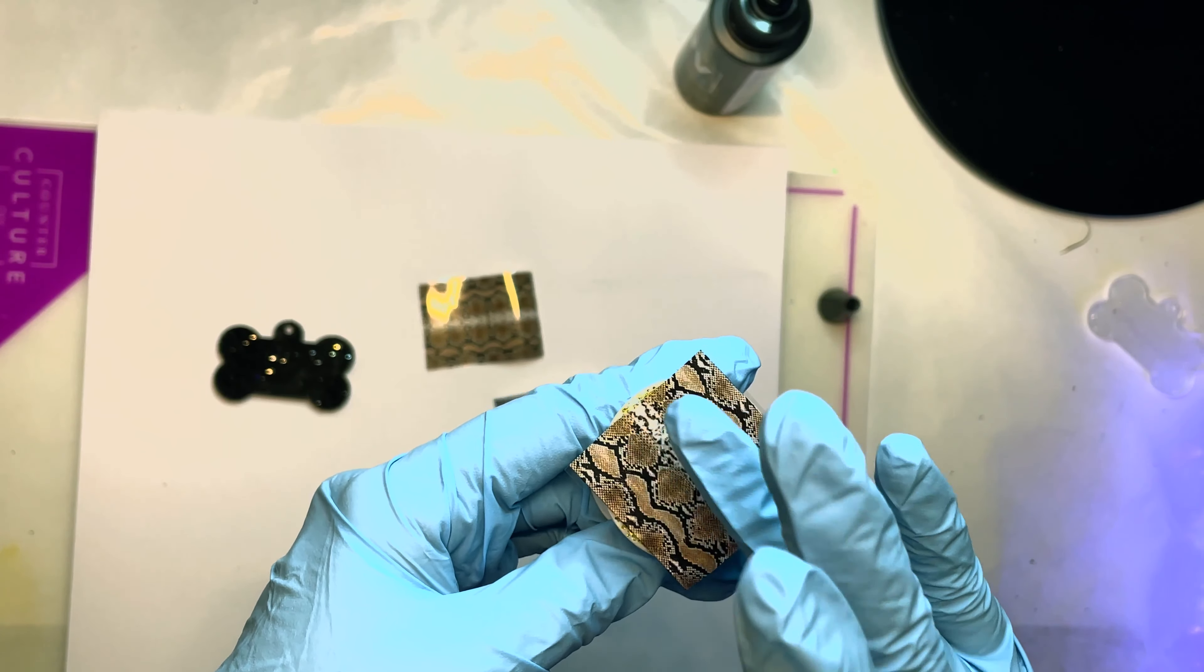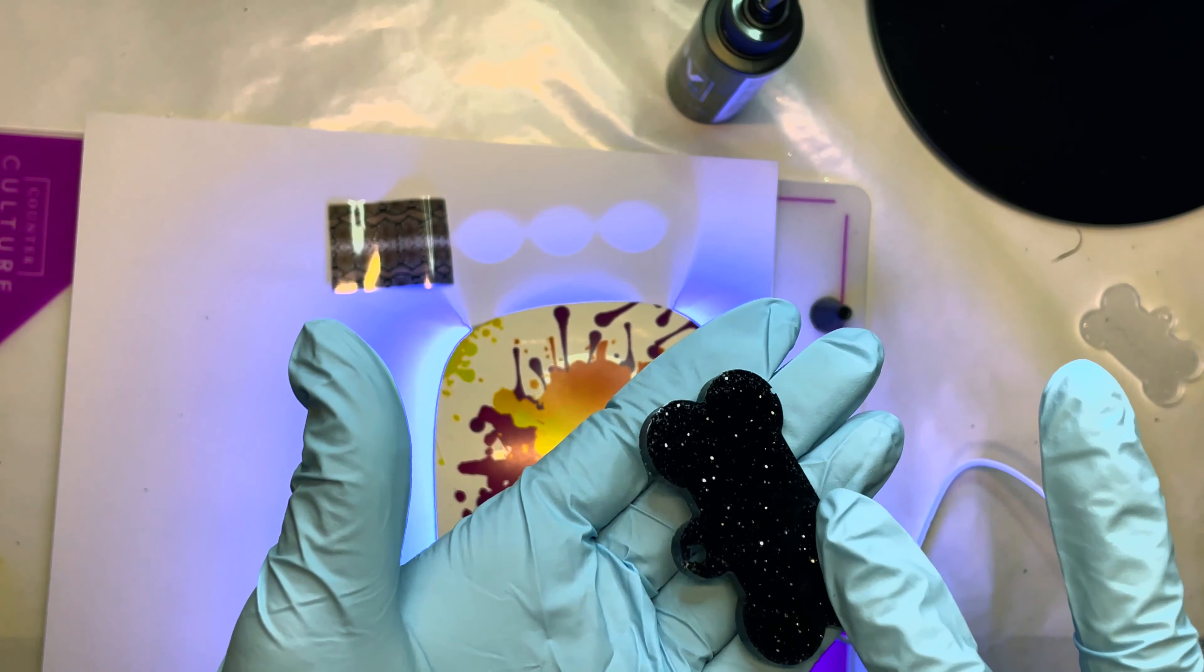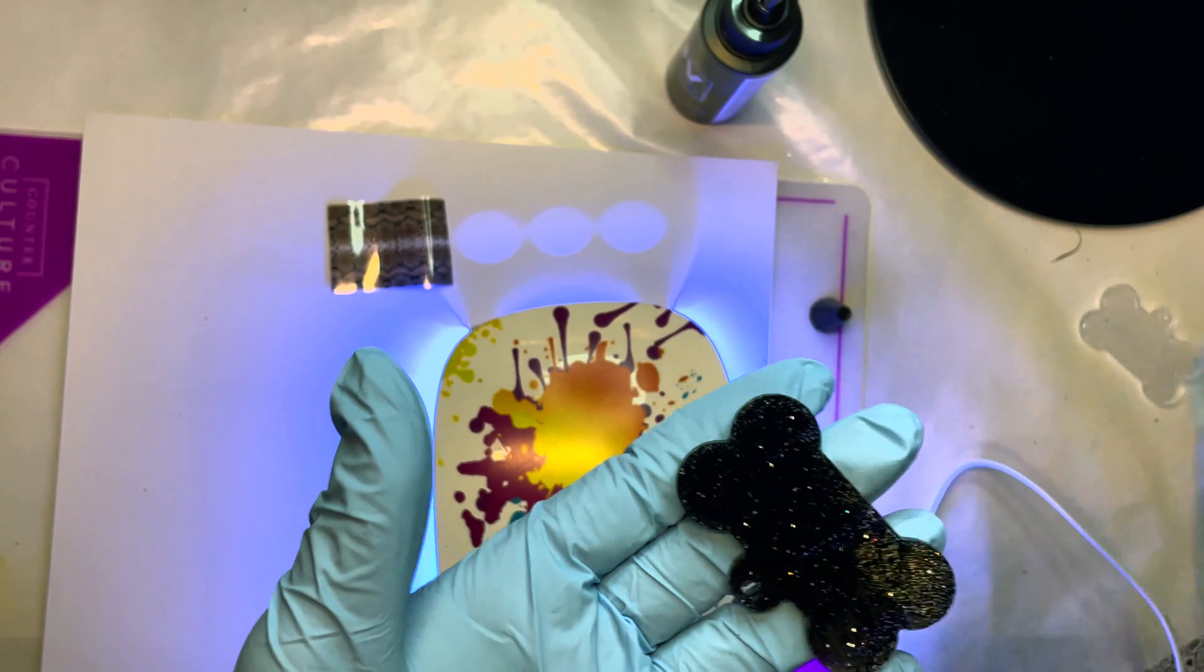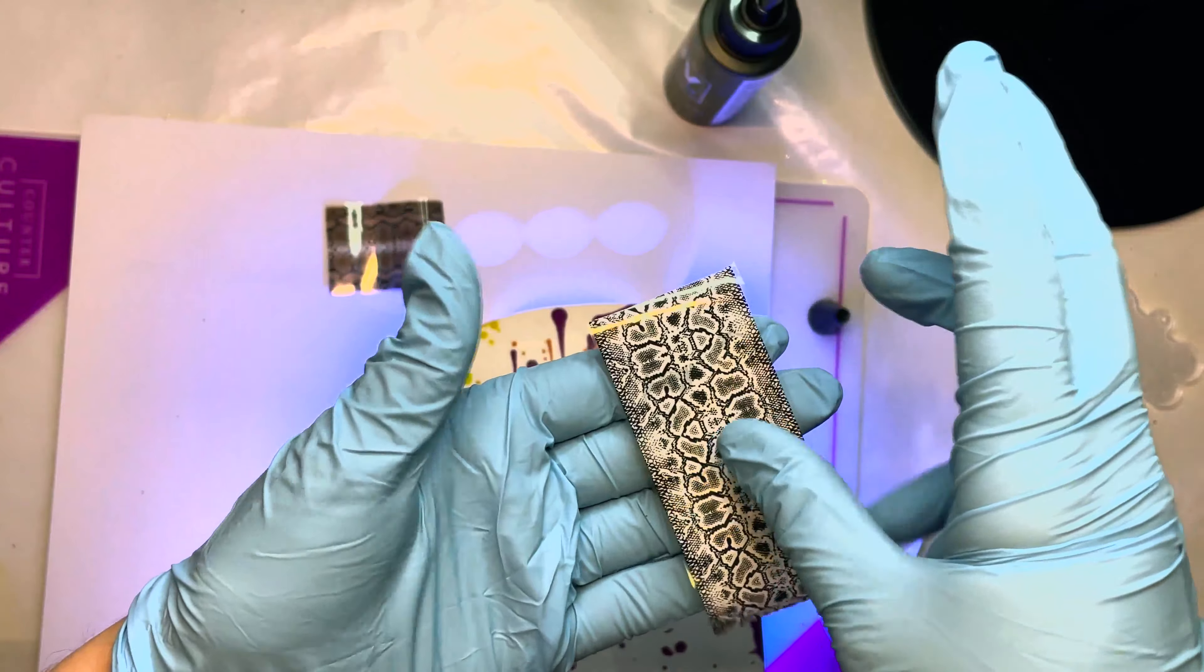While that one is curing, we can go ahead and do this piece. Again, I'm going to do the entire thing. I still have some resin on my finger, so I'm not going to waste anything. I'm just going to put it right on there. It's almost like you're doing the epoxy method—you only need a little bit.